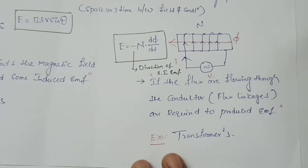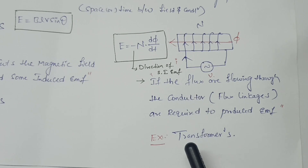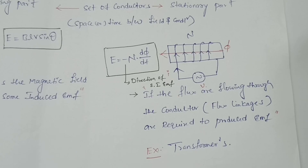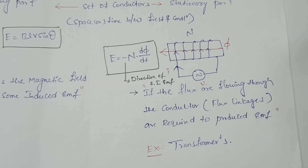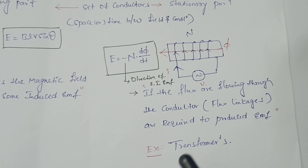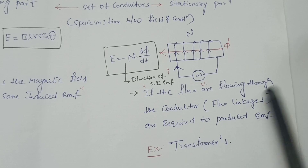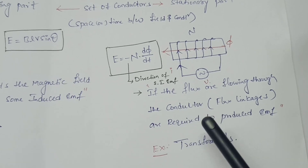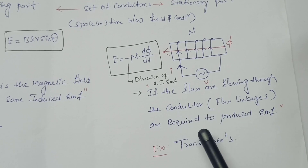As an application of statistical induced EMF, transformers and AC machines are the best examples. Statistical induced EMF is also called Faraday's law of electromagnetic induction, and it is also called the mutual induction principle. Both names refer to the same principle.